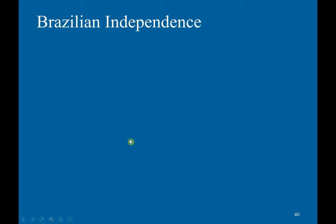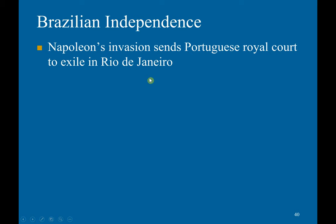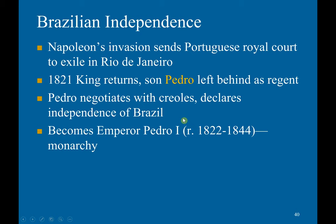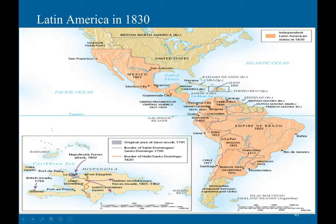Napoleon's invasion of Portugal sent the Royal Portuguese Court into exile in Rio de Janeiro. In 1821, the king returned, leaving behind his son Pedro as regent. Pedro negotiated with the creoles and declared the independence of Brazil, proclaiming himself Emperor Pedro I and establishing a Brazilian monarchy. However, the social structure remained largely intact. This map depicts Latin America in 1830 — all these colonies gained independence in the 1820s because Napoleon's invasion had greatly undermined Iberian authority.